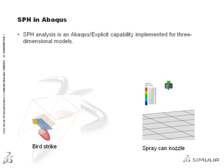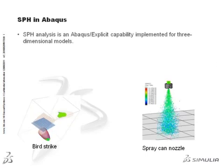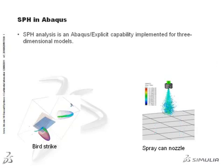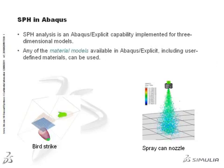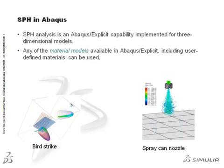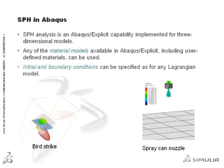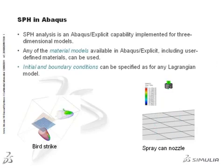SPH analysis is an Abaqus Explicit capability implemented for three-dimensional models. Note that axisymmetric models can be simulated using a wedge-shaped sector and symmetry boundary conditions. Any of the material models available in Abaqus Explicit, including user-defined materials, can be used. Initial and boundary conditions can be specified as for any Lagrangian model.